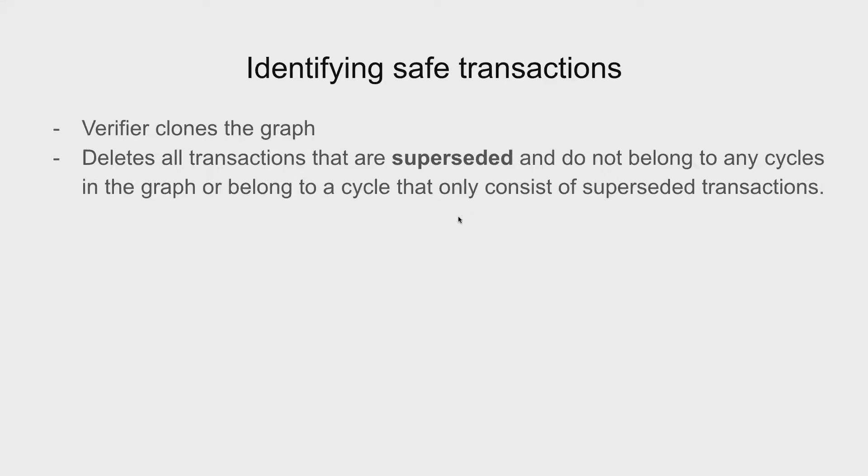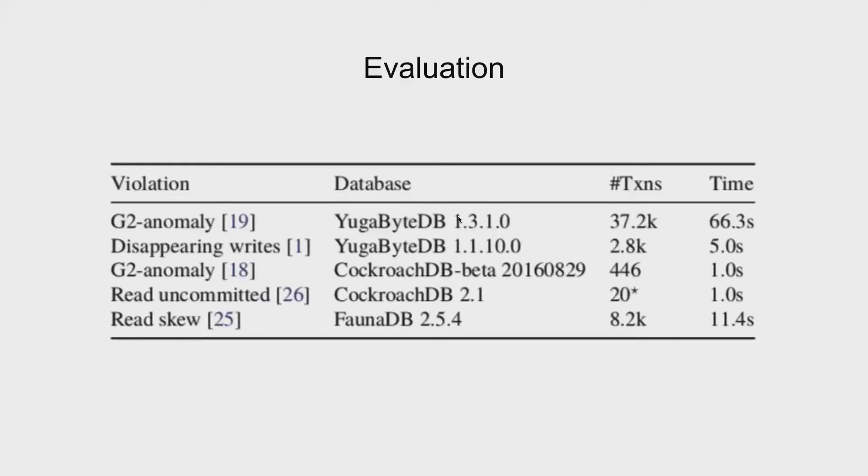So we are done with all the components of the verifier. Let's take a look at the evaluation next, of how Cobra has performed on some real world workloads. First Cobra's performance was tested on previously reported anomalies, which were mostly reported by Jepson. These figures show that Cobra was able to terminate in a very reasonable amount of time while detecting the violations that Jepson also detected.